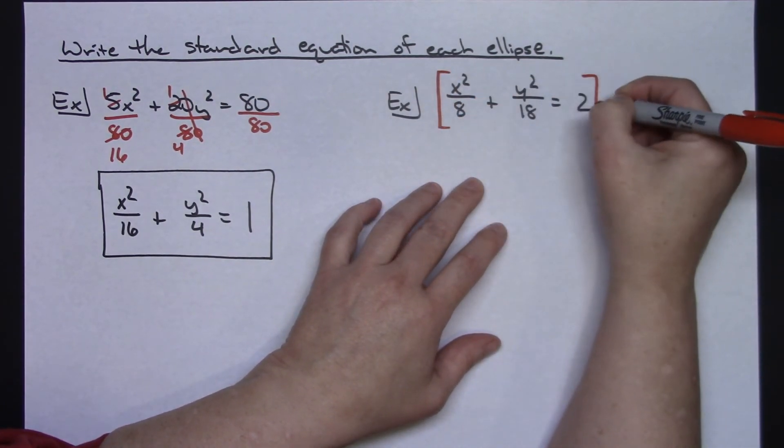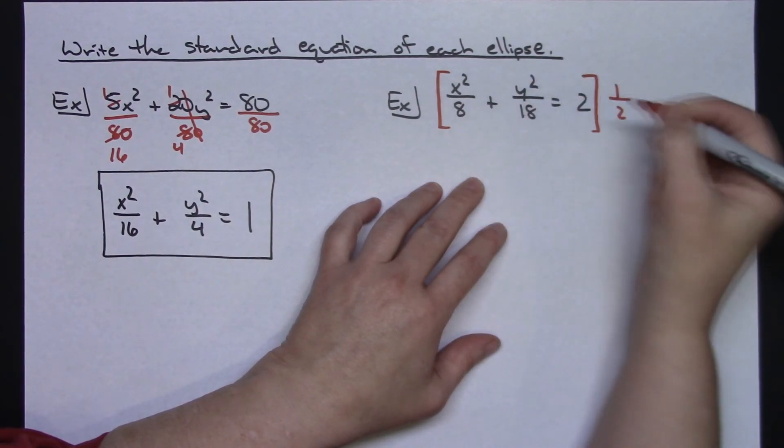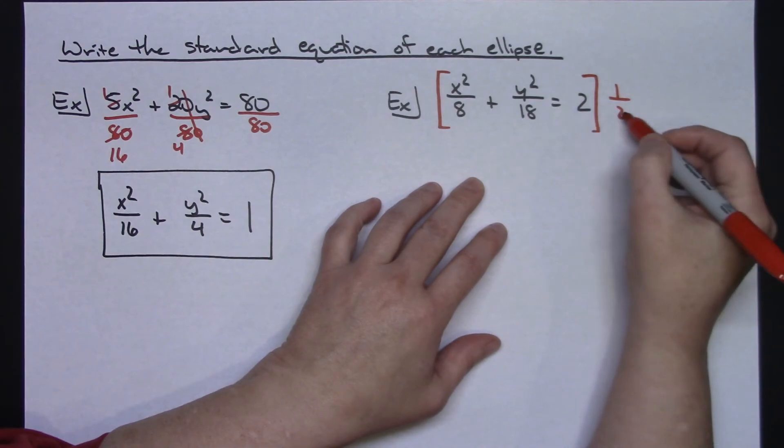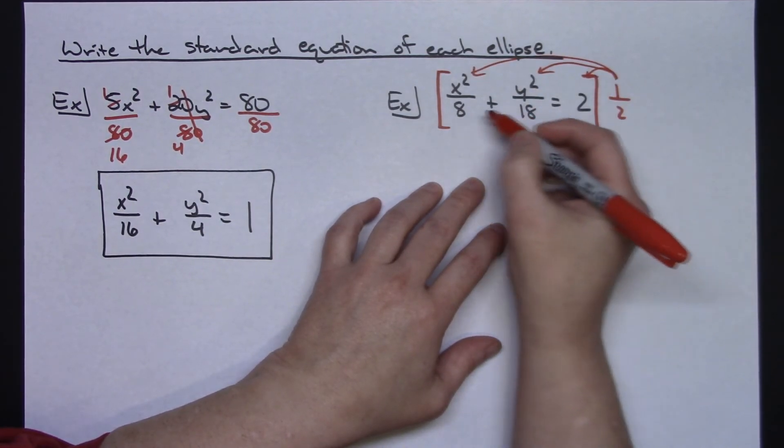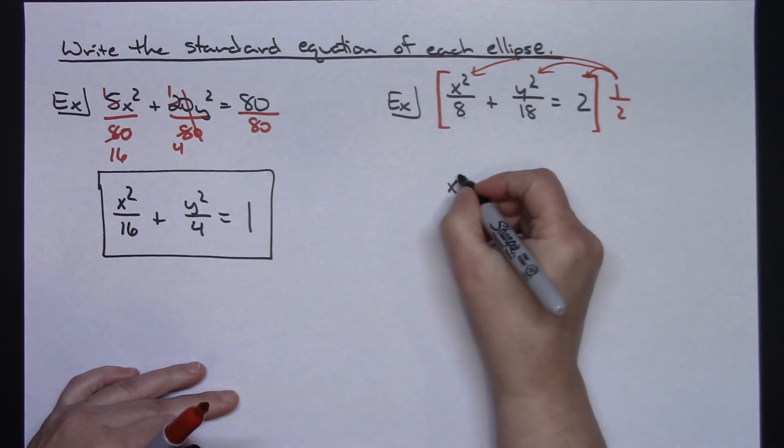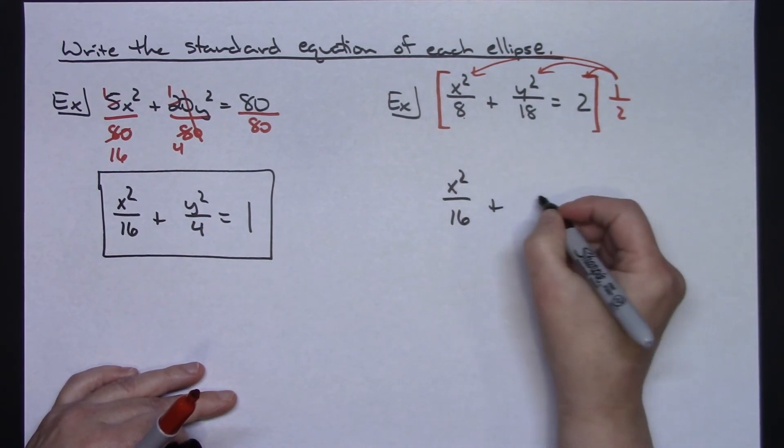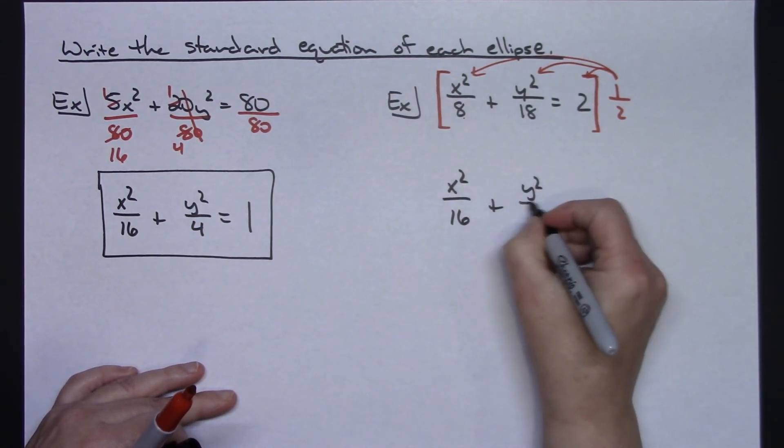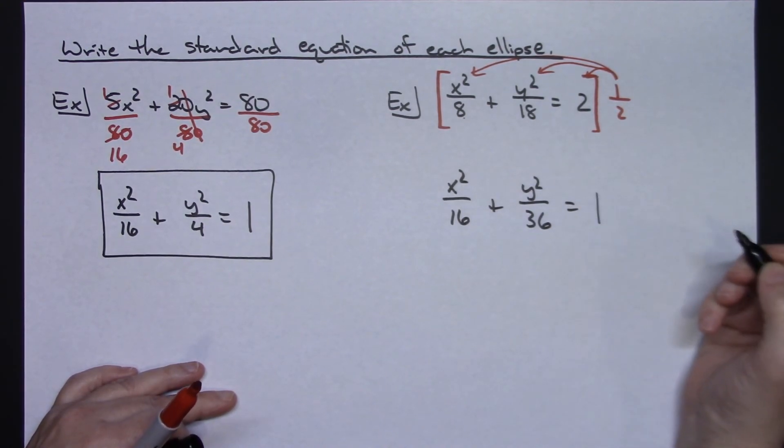So, if I would choose to multiply the entire thing by 1/2, distribute each one of those, 2 times the 1/2 will give me the 1 there, which is what I want, but multiplying, distributing to each of these other scenarios, 2 times the 8 is going to give me a 16 there, so x squared over 16, 2 times the 18 there is going to be a 36, so y squared over 36, and then 2 times that 1/2 will give me the 1 there.